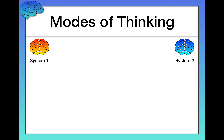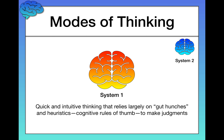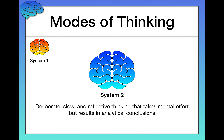This leads me to one or two more quick topics: modes of thinking. We as humans have two modes of thinking — system one thinking and system two thinking. System one thinking is quick and intuitive thinking that relies largely on gut hunches and heuristics, or cognitive rules of thumb, to make judgments about the world. System two thinking, in contrast, is deliberate, slow, and reflective thinking that takes mental effort and time but results in more analytical conclusions.